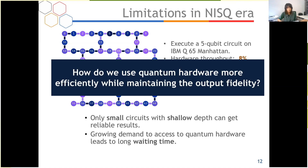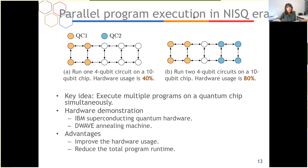Parallel program execution was proposed to address this problem. Here is an example: running a four-qubit circuit on a 10-qubit chip gives only 40% hardware usage. But if we run two circuits simultaneously, the hardware usage becomes 80%. The key idea is to execute multiple programs on the quantum chip simultaneously. This has already been demonstrated on IBM superconducting quantum hardware and D-Wave annealing machines, improving hardware usage and reducing total program runtime.